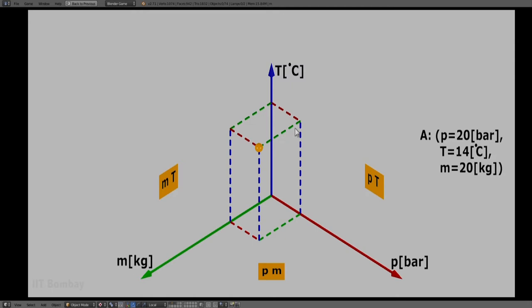You can see the rectangular parallelepiped and hence the values of the pressure coordinate which will be 20 bar, the temperature coordinate which will be 14 degrees C and the mass coordinate which will be 20 kilogram.